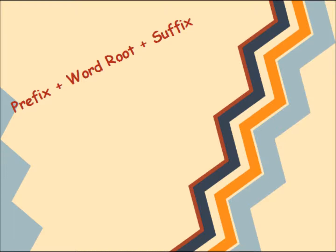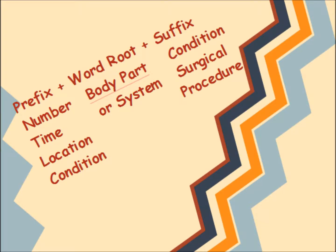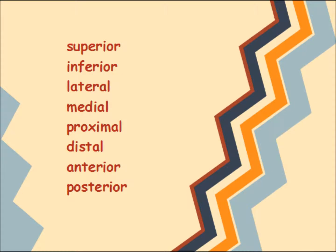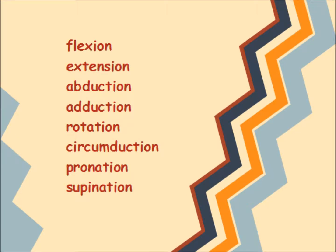In this first unit, we will learn about how words are put together in medical terminology and what different word parts tell us. We'll learn new words for all the old colors, and we'll learn new words for directions and movements.